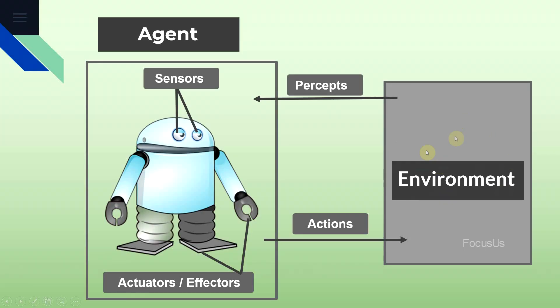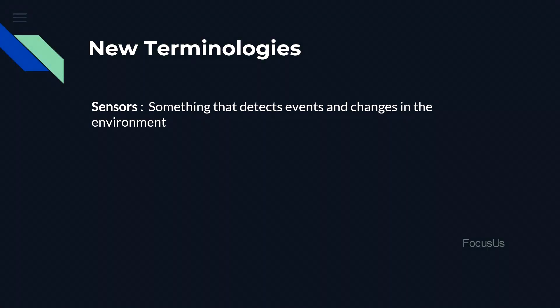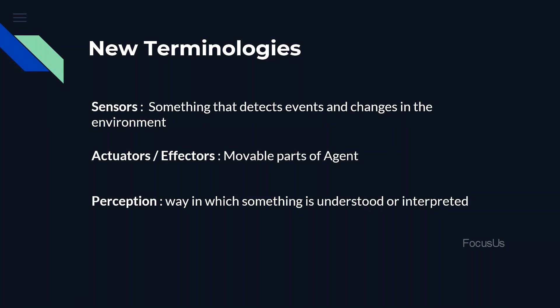Let's look at the figure. Here we have the environment and the agent. Our agent should have something called sensors and actuators — actuators are also called affectors sometimes. Sensors are something that detects events and changes in the environment, whereas actuators are the movable parts of the agent. Perception is the way in which something is understood or interpreted, where inputs are taken from different sensors. The percept is just the agent's perceptual inputs at a given instance.